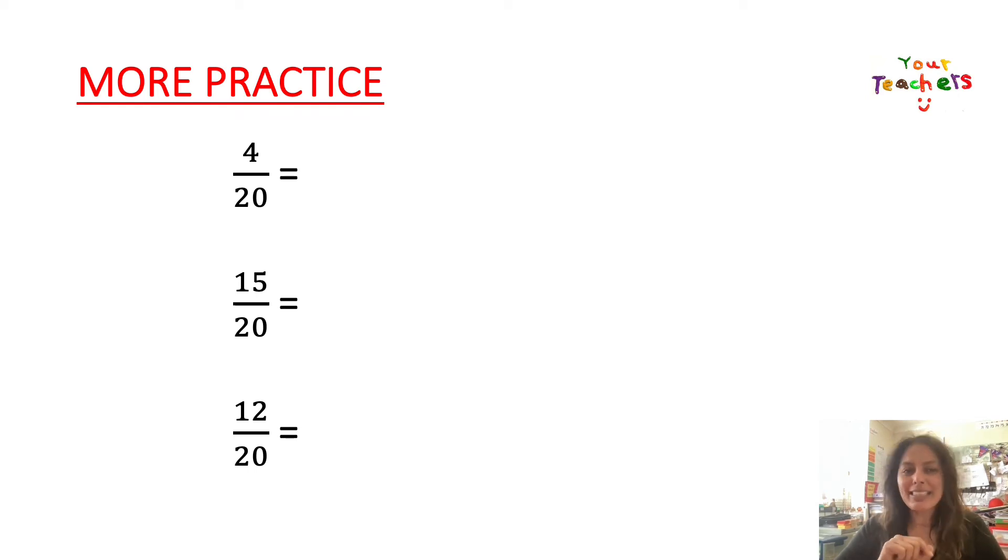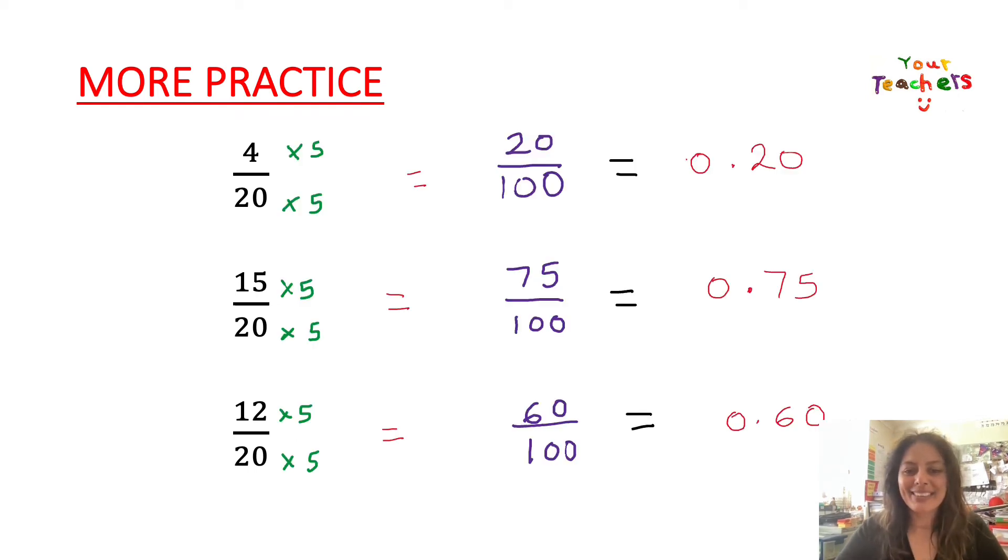Otherwise, if you need a hand, let's have a look at what to do next. So here I'm going to multiply by 5 because I know 2 times 5 is going to give me 10. Therefore, 20 times 5 must give me 100.